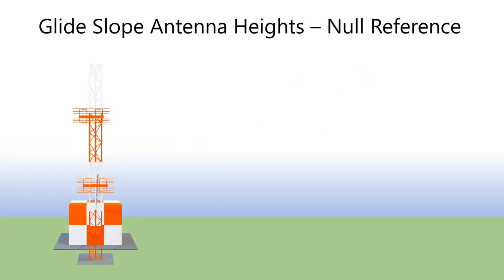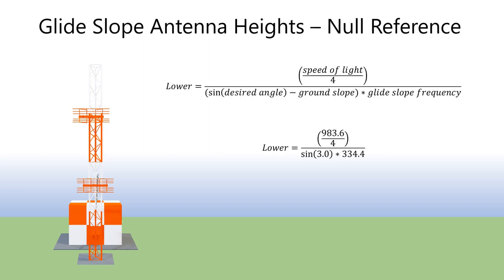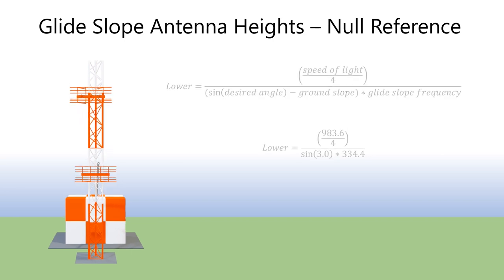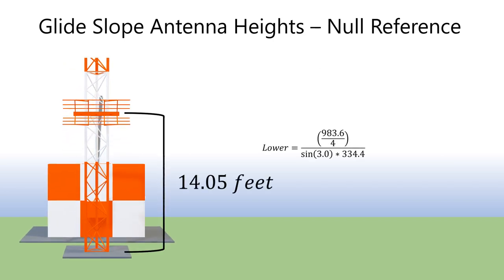As you can see, the height of the antennas plays an important role in establishing the glide path angle, and it can be calculated as follows. We begin with calculating the height of the lower antenna. We first take the speed of light in feet per second divided by 4. Then divide that by the sine of our desired angle, which is 3 degrees for this example, minus any slope for this example. We'll assume that the ground is perfectly flat in front of the glide slope antenna, times the glide slope frequency. And in this example, I chose a frequency at the center of the ILS band of 334.4 MHz. The result gives us an initial height of 14.05 feet for the lower antenna. This means you would position the antenna on the tower at this height as measured from the base of the tower to the midpoint of the center dipole. However, flight inspection is the final method for fine-tuning these heights. This calculation simply gives you a very good starting point.